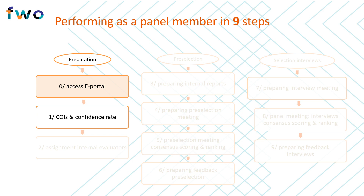A first formal step in the evaluation procedure consists of the FWO inviting you to indicate for each application submitted to your panel whether you have a conflict of interest. At the same time you will be able to indicate how closely your expertise aligns with each application in order to facilitate the distribution of applications amongst the panel members. There is a separate instruction video on submitting the conflict of interest and confidence rate information. The distribution of applications is done by the scientific chair who is supported by the FWO. For each application three internal reviewers are appointed at this stage. You will of course be informed about the applications assigned to you as internal reviewer. We will also indicate for which applications you will be responsible for the feedback. Please be aware and mindful of the deadlines that apply to the internal review reports.